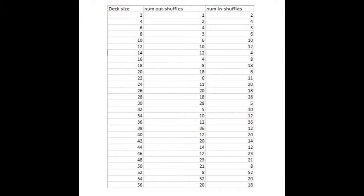We began to look for patterns that exist in the table. One thing we noticed right away was that deck sizes that are powers of two followed a predictable pattern. For a deck of size 2 to the n, the number of out shuffles required is equal to n, and the number of in shuffles required is equal to 2n. For example, for a deck of size 8, or 2 to the 3rd, the number of out shuffles required is equal to 3, and the number of in shuffles required is equal to 6. Another noticeable pattern is that for a deck of size n, the number of in shuffles required is equal to the number of out shuffles required for a deck of size n plus 2. We see that here in a diagonal pattern.